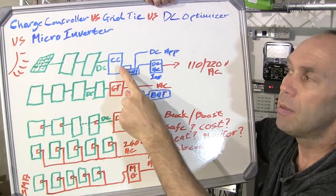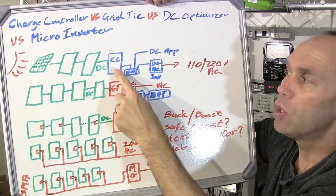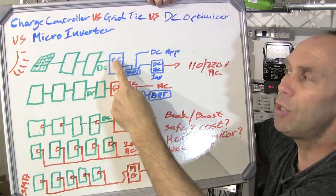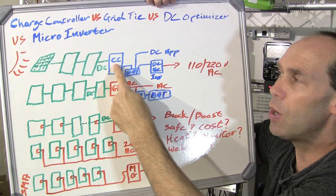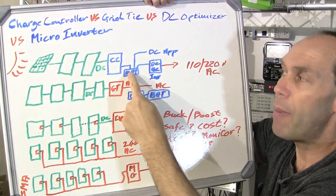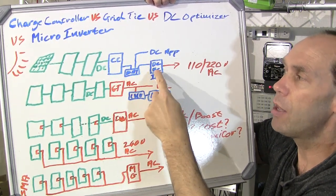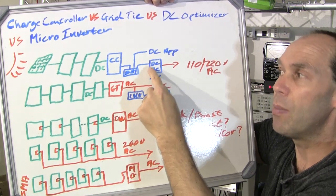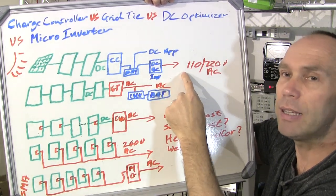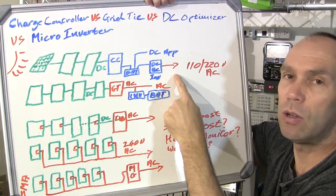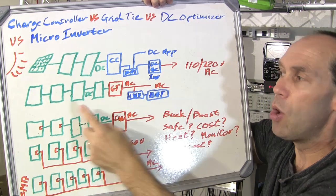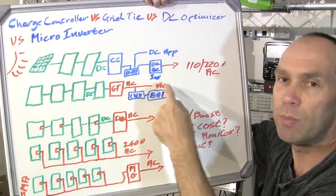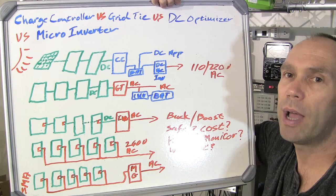If you had a charge controller system in a normal household, you'd be coming in DC to the charge controller, then into a battery with losses, and then out through an inverter back to AC — so there are lots of losses along the way. Whereas with a grid tie system you're going straight from DC to AC to be used by appliances in your house.